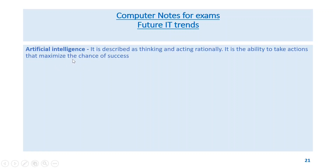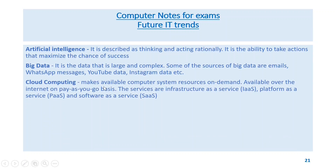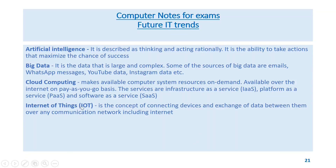Future IT trends: artificial intelligence is described as thinking and acting rationally — the ability to take actions that maximize the chance of success. Big data is data that is large and complex; sources include emails, WhatsApp messages, YouTube data, Instagram data, etc. Cloud computing makes computer system resources available on demand over the internet on a pay-as-you-go basis; services include IaaS, PaaS, and SaaS.